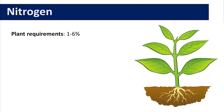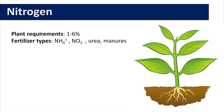Nitrogen is required in a plant from 1–6% depending on the plant type. The fertilizers that can be used include anything that is based on ammonium, nitrate, urea, and many manures.